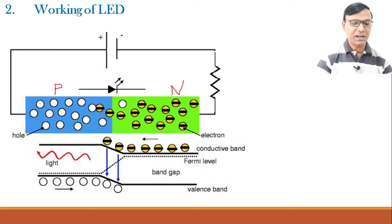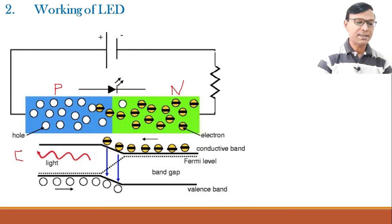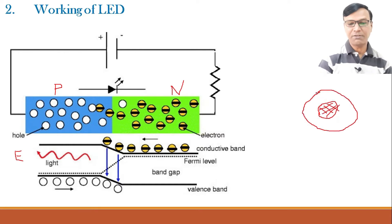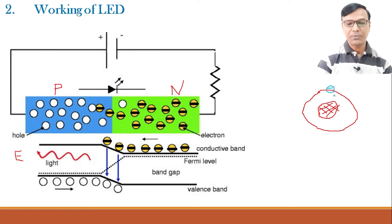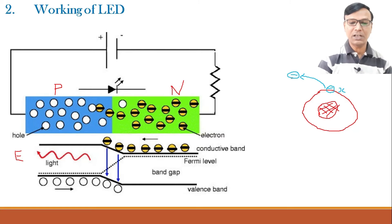In the energy band diagram, the conduction band contains free electrons and the valence band contains holes. When conduction band electrons fall into the holes, light is released. For example, consider one atom with a nucleus and a valence shell containing one electron. Currently this is not a free electron. When some energy is given to this electron, it jumps out of the valence shell and becomes a free electron. Say the electron in the valence shell has energy X, and when it becomes a conduction electron it has energy 2X.